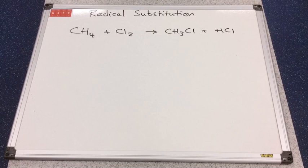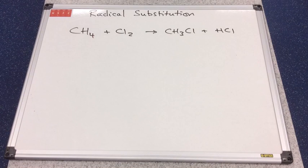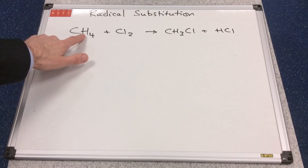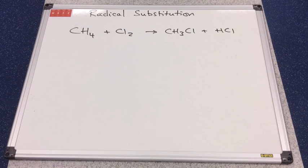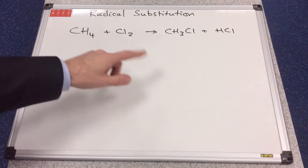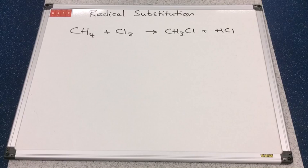This video describes the radical substitution mechanism of alkanes with halogens, using methane and chlorine as the example. There's the overall reaction. It's a substitution reaction because we've taken a hydrogen off the methane and substituted it with one of the chlorines. This is different to an addition reaction — addition reactions have two reactants making one product, whereas substitution reactions have two reactants and two products.